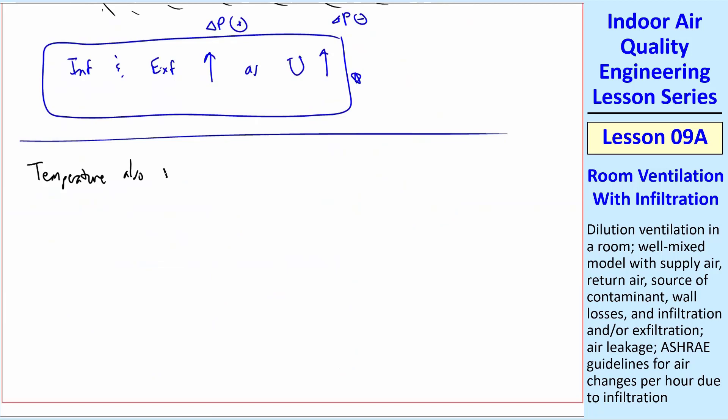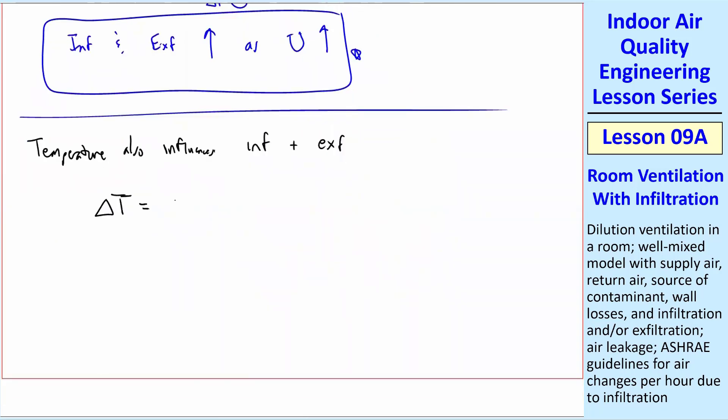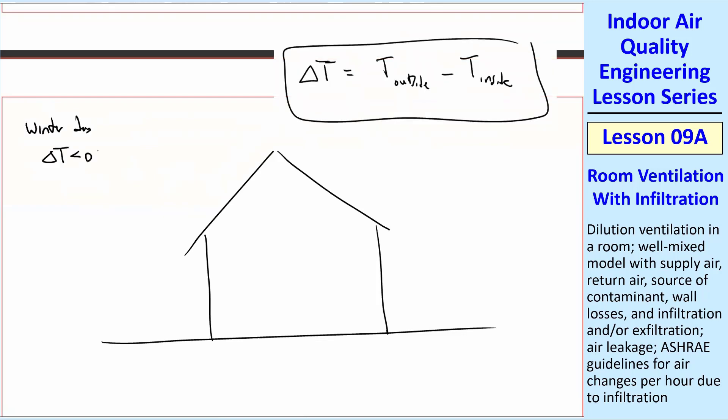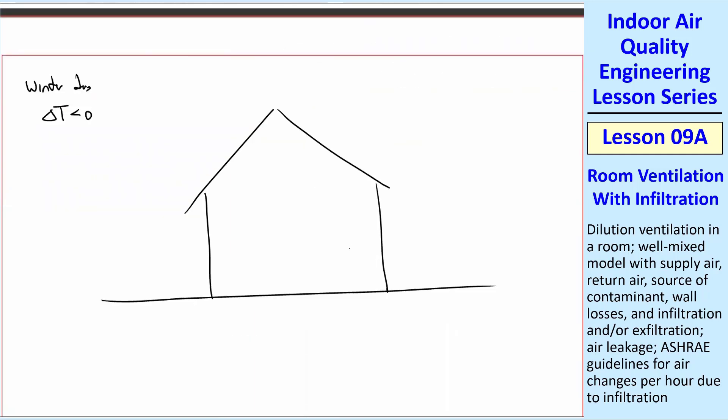Temperature also influences the infiltration and exfiltration. Let's define delta T is T outside minus T inside. If you have a cold winter day, so let's look at our house. Let's not worry about wind. But on a winter day, delta T is negative because the outside is cold. The inside is warm. And suppose we have a nice fireplace not on.